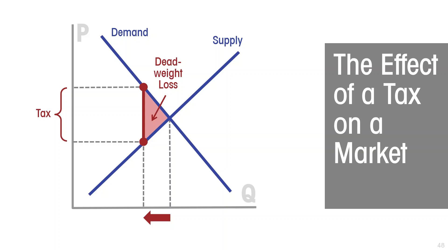The deadweight loss derives from the fact that the lost number of transactions are actually valued by consumers — by purchasers — more than they cost to supply. So it's a loss of welfare because the tax reduces the amount of activity taking place for this product.